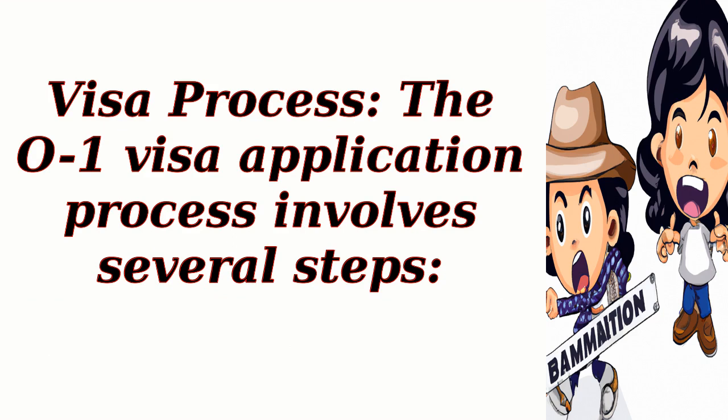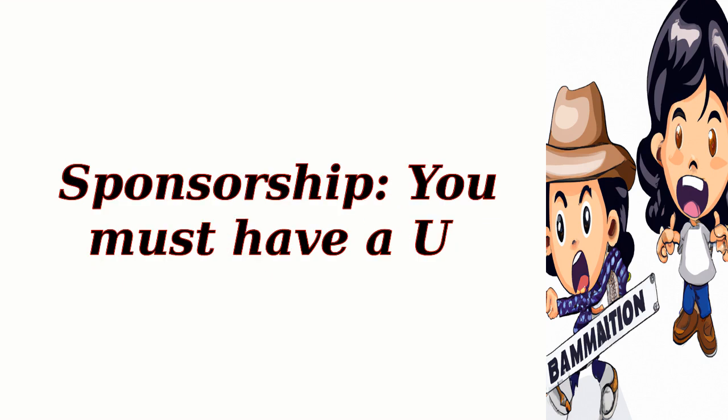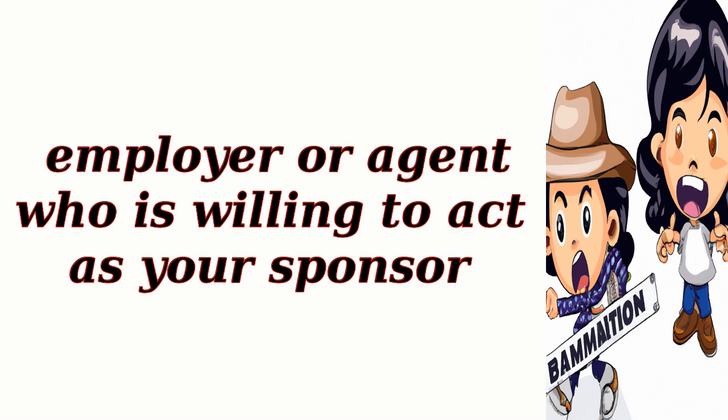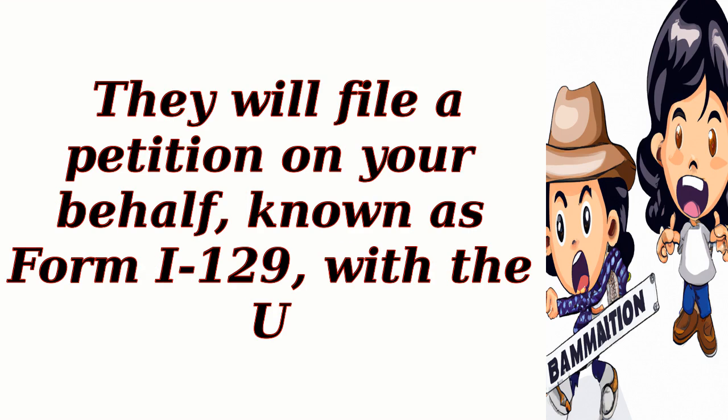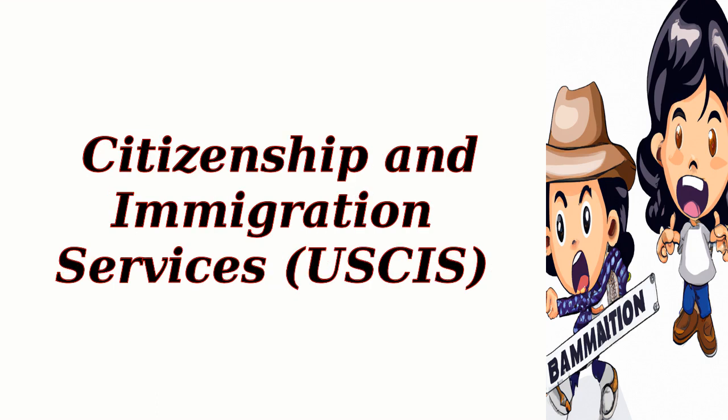Visa process: The O1 visa application process involves several steps. Sponsorship: You must have an employer or agent who is willing to act as your sponsor. They will file a petition on your behalf, known as Form I-129, with the U.S. Citizenship and Immigration Services (USCIS).